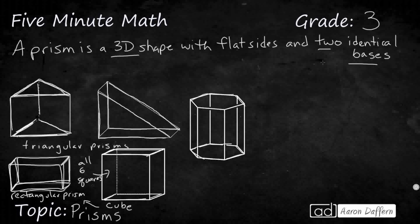One, two, three, four, five, six. So a six-sided shape is going to be a hexagon. So this is a hexagonal prism.